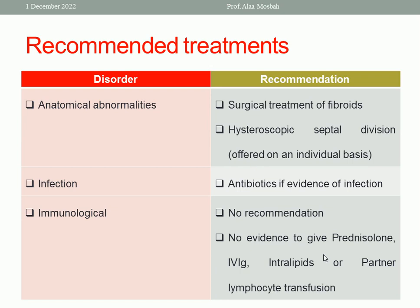Regarding infection: although infection is not considered a proven cause of recurrent miscarriage, and no investigation is routinely needed, if a woman has symptoms of chlamydial infection, gonorrhea, bacterial vaginosis, or any other infection, investigation to diagnose and treat the infection is appropriate — antibiotics for confirmed infection.